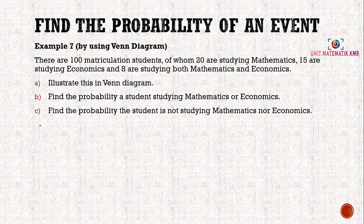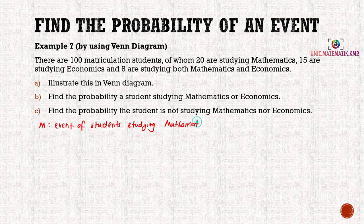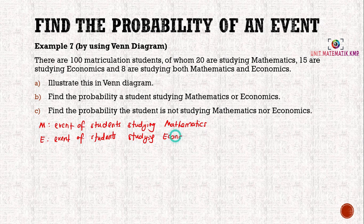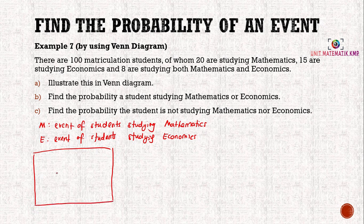Before we draw the Venn diagram, we need to name the events. M is the event of students studying mathematics, and E is the event of students studying economics. So we have a Venn diagram with an intersection, because 8 students are studying both mathematics and economics.